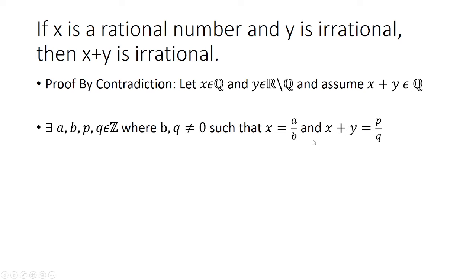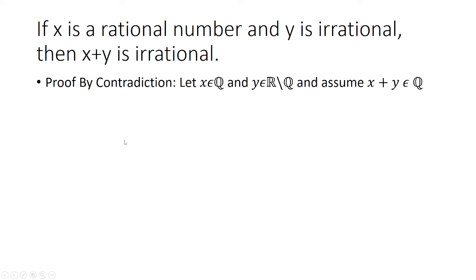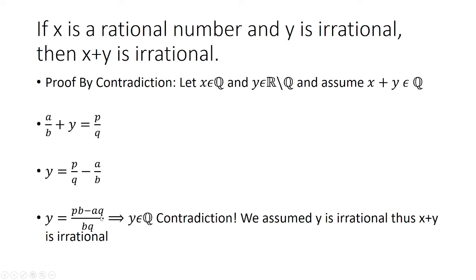The goal here is to solve for y. We have x plus y equals p over q, and x is equal to a over b, so I'm going to make that substitution. Now I can solve for y by subtracting both sides by a over b, and bring this under one fraction: y equals pb minus aq, over bq.